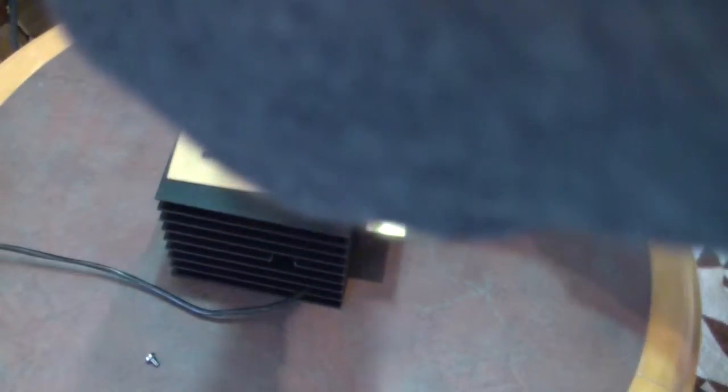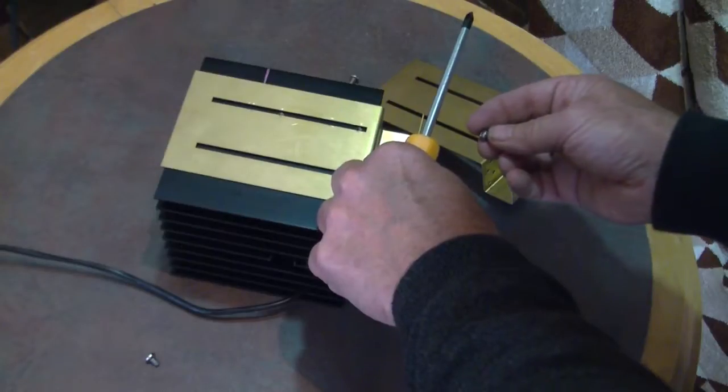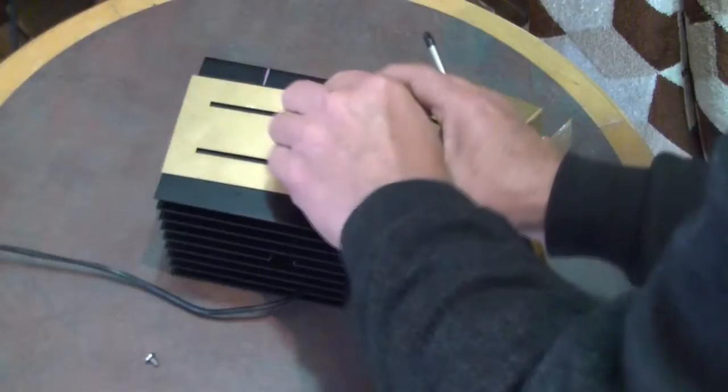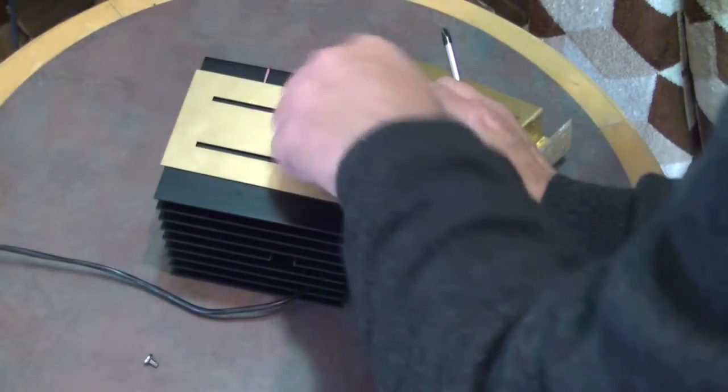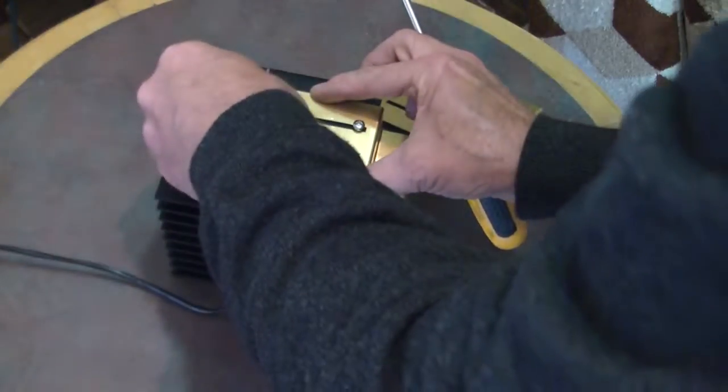Next we put in two M4 pan head bolts through the slots in one side bracket, top and bottom, but not doing them up tightly at this point. This allows us to slide the bracket up and down and make other adjustments.